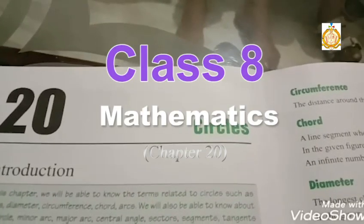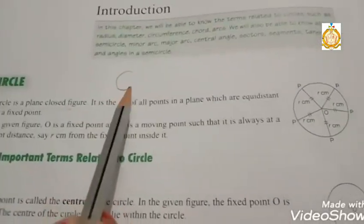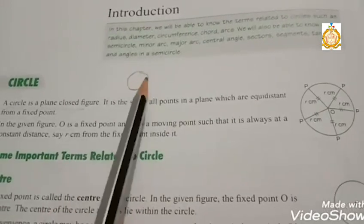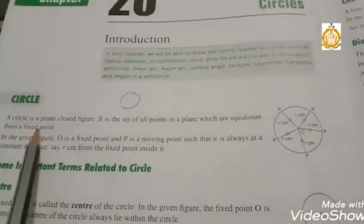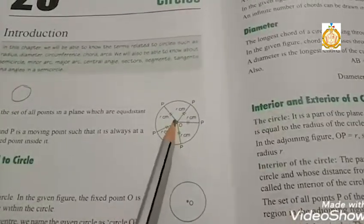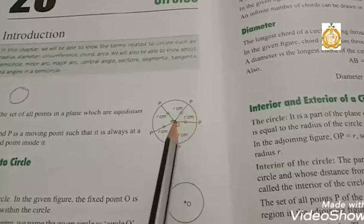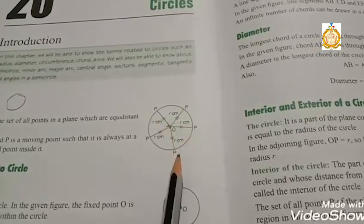Good morning, 8th class. Today we are going to start chapter number 20: Circles. So students, what is a circle? A circle is a plane closed figure. It is a set of all points in a plane which are equidistant from a fixed point. Here is a fixed point, and all the lines are at the same distance — equidistant — from that fixed point. This is a circle.